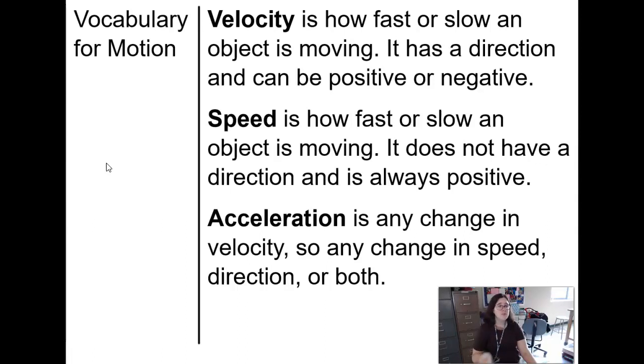Speed also describes how fast or slow an object is moving, but direction is irrelevant and it is always positive. You can think of speed as how much distance you travel over time, whereas velocity is how much displacement you have over time.